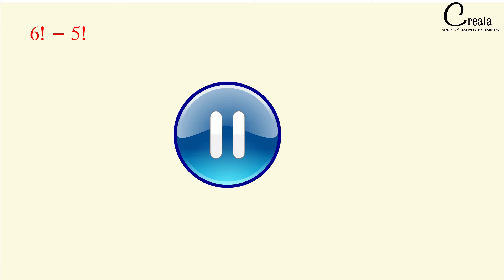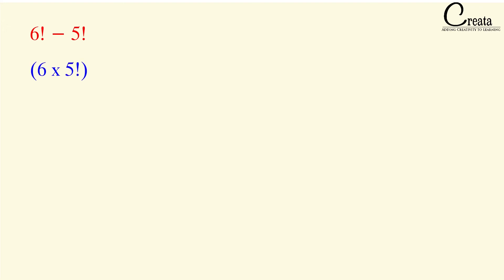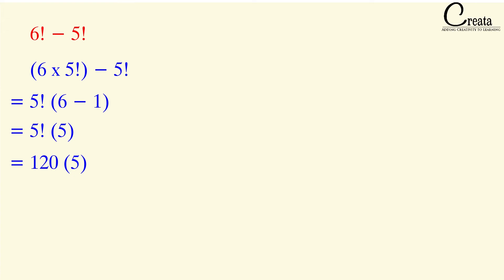Next question: 6! − 5!. Pause the video and try to solve it. We rewrite 6! as 6 × 5!, then factor out 5!: 5!(6 − 1) = 5! × 5. Since 5! = 120, the answer is 120 × 5 = 600.